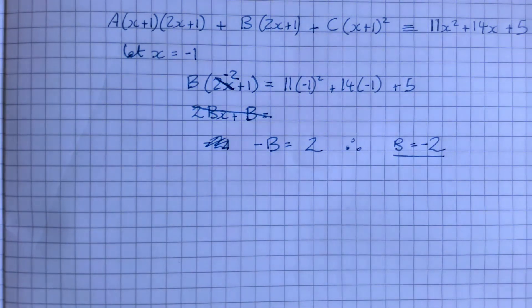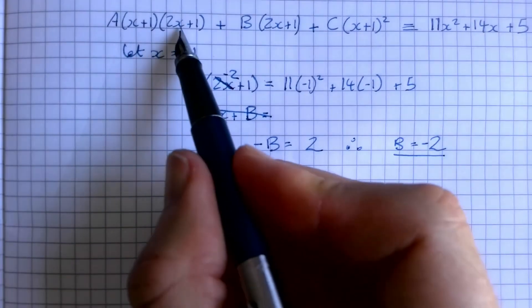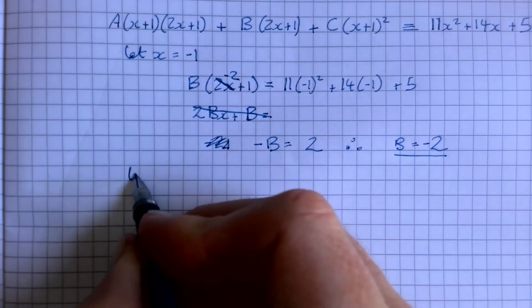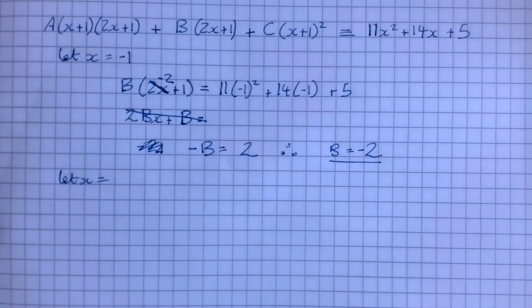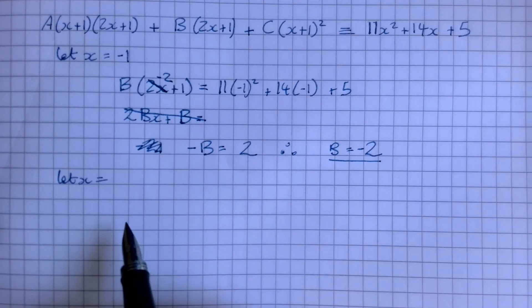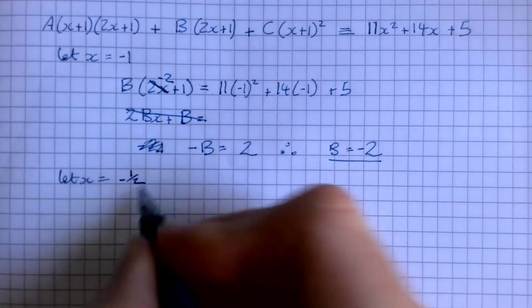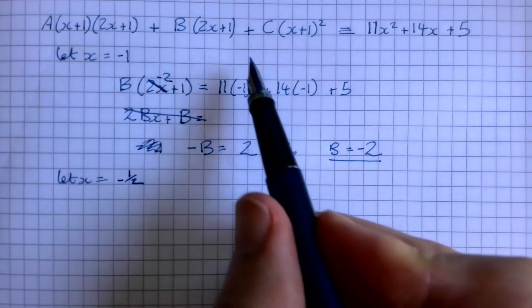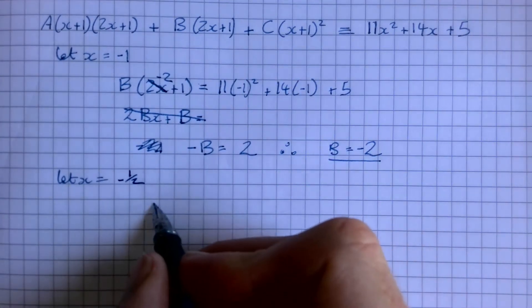And that's our first part of the answer. Then we need to make this bracket zero, don't we? So in order to do that, we need to let x equal minus a half, because then that will make the other bracket zero, and that means we won't get any A's again, we won't get any B's, we will just have C.